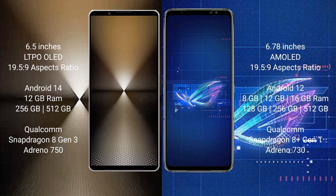Sony Xperia 1 Mark 6 runs on Android 14. Asus ROG Phone 6 runs on Android 12. Sony Xperia 1 Mark 6 comes with 12GB RAM and 512GB or 1TB internal storage with a Qualcomm Snapdragon 8 Gen 3 processor and Adreno 750 GPU. Asus ROG Phone 6 comes with 8GB, 12GB, or 16GB RAM and 128GB, 256GB, or 512GB internal storage with a Qualcomm Snapdragon 8 Gen 1 processor and Adreno 730 GPU.